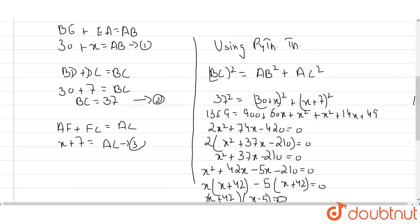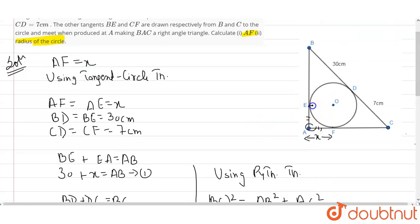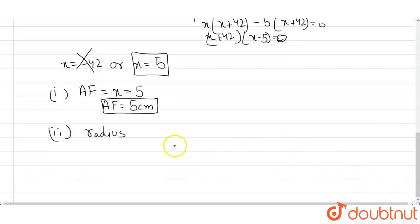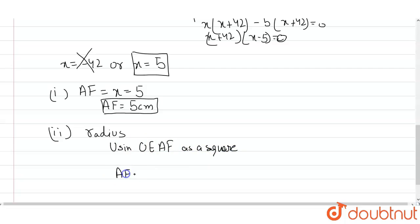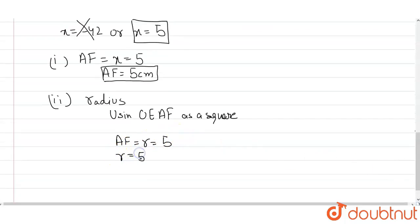Looking at the figure, OEAF forms a square. Since all sides of a square are equal, and we found AF equals 5, each side including the radius r is also 5. Therefore, using square OEAF, the radius r equals 5 centimeters. Both AF and r equal 5 centimeters.